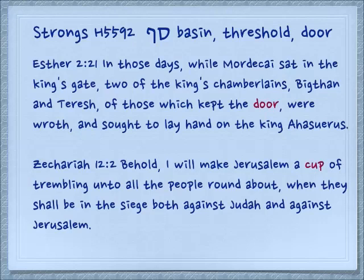Esther 2:21: 'In those days while Mordecai sat in the king's gate, two of the king's chamberlains, Bigtan and Teresh, of those which kept the door, were wroth and sought to lay hand on King Ahasuerus.'